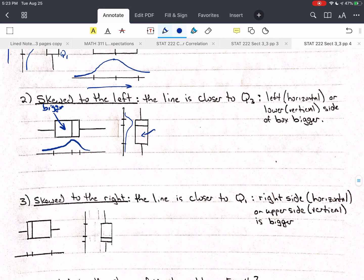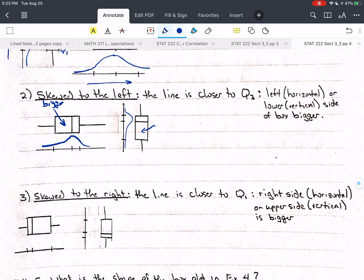And skewed to the right is going to be the opposite. So, we're going to go up pretty fast and then slow down. So, that is skewed to the right. And, the box, if you're horizontal, the box to the right is bigger.